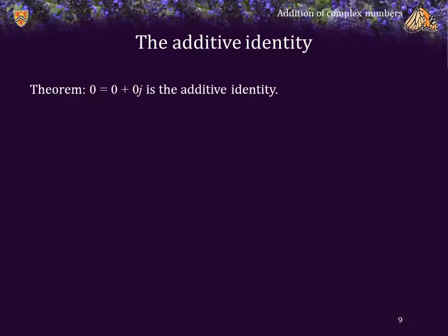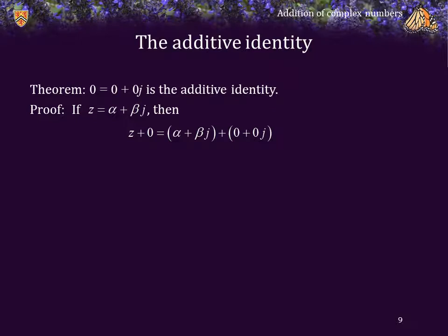Theorem: 0, which is 0 plus 0j in the complex plane, is the additive identity. Proof. If z is an arbitrary complex number, alpha plus beta j, then z plus 0 is equal to alpha plus beta j plus 0 plus 0j. We can add the real and imaginary components. And we see that that is equal to alpha plus beta j, which is equal to z. Thus, z plus 0 is equal to z. And therefore, 0 is indeed the additive identity.